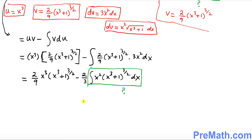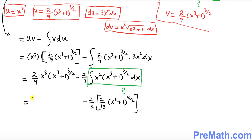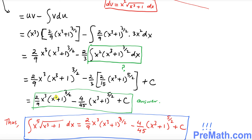We are back to our original equation. The remaining integral turned out to be 2/15·(x³+1)^(5/2), and multiplied by the −2/3 outside. Combined with the first term, our final complete answer is 2/9·x³·(x³+1)^(3/2) − (4/45)·(x³+1)^(5/2) + C, where C is the arbitrary constant. Thanks for watching and please subscribe to my channel for more exciting videos.